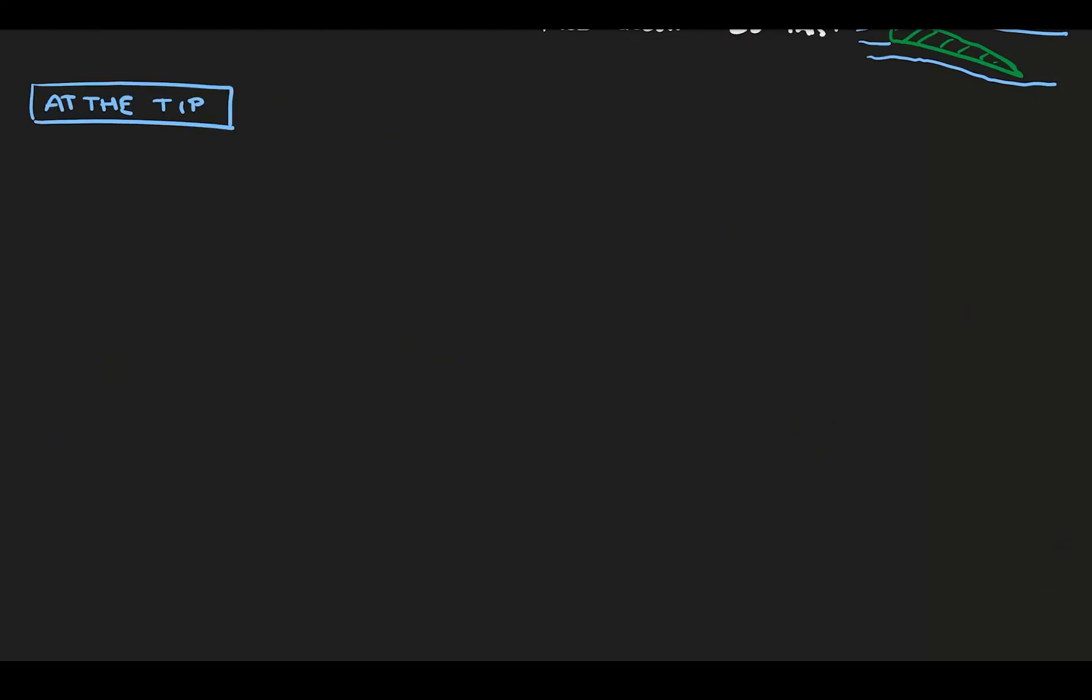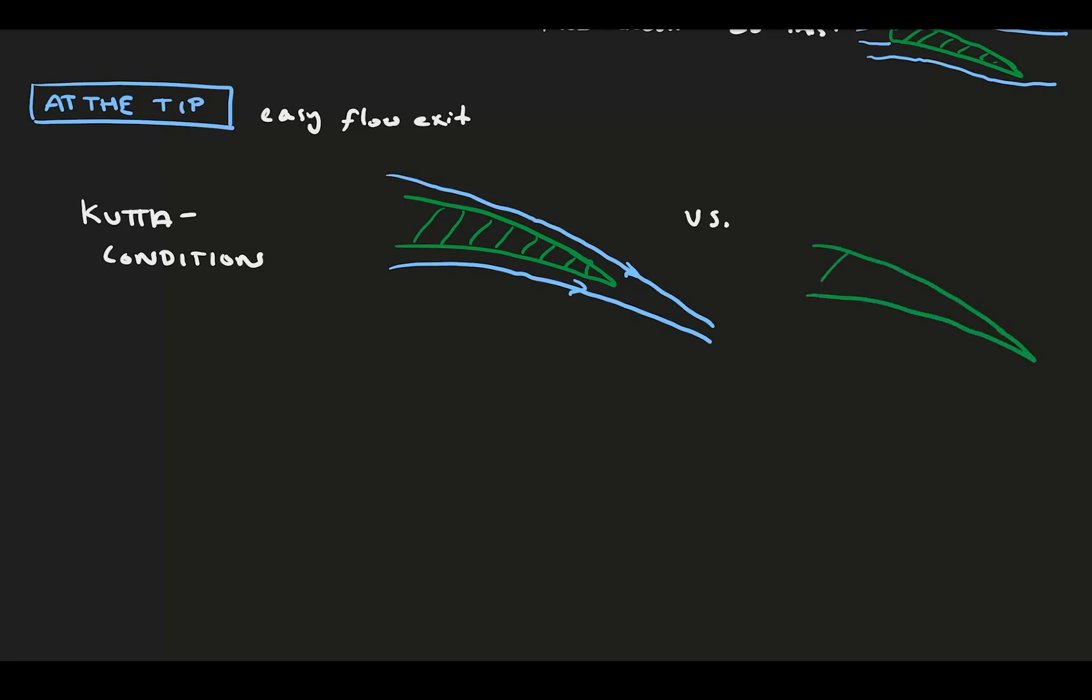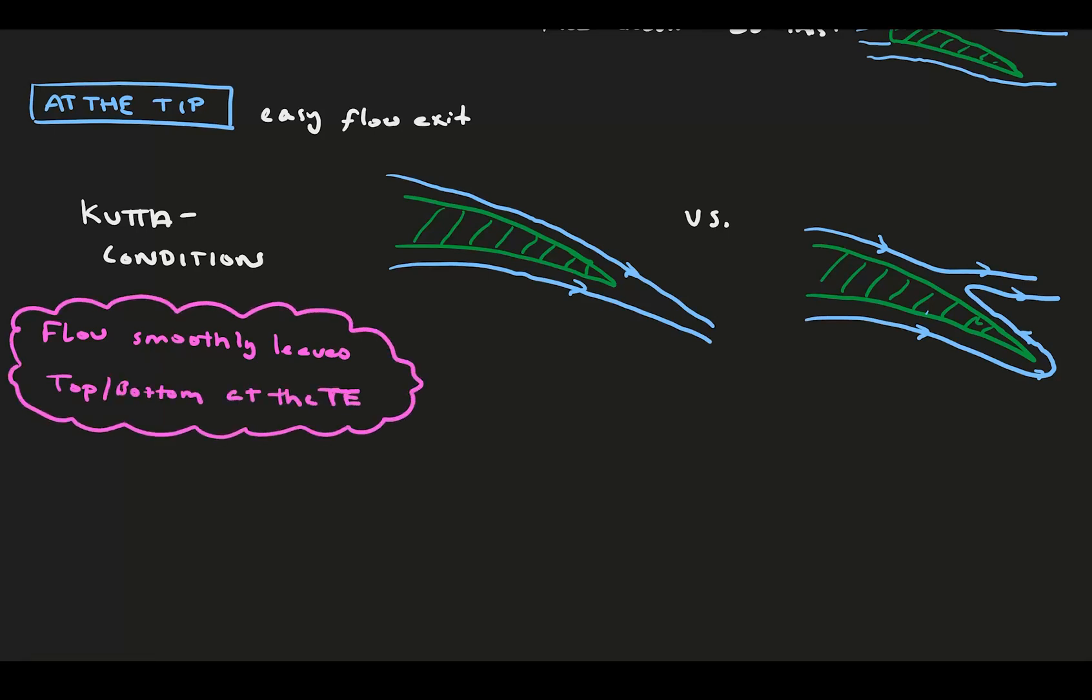And finally, we have the trailing edge section of the foil, where the flow tends to exit cleanly and parallel to the surface. The clean exit is due to the Kutta condition. Consider a sharp trailing edge in two scenarios. The first scenario is where the flow exits cleanly. In the second scenario, the flow bends around the back sharp edge of the foil, goes back up the backside, and then exits away from the trailing edge. The Kutta condition states that flow prefers to leave smoothly at that sharp trailing edge. It's the choice that we tend to observe in application. It's really nature's preference.